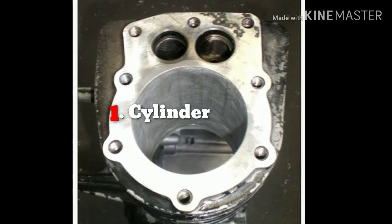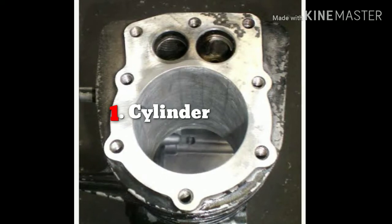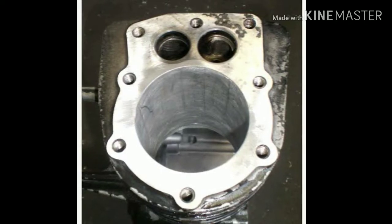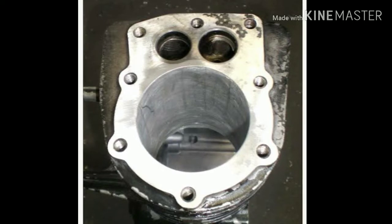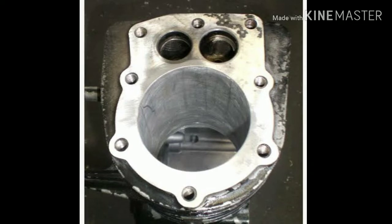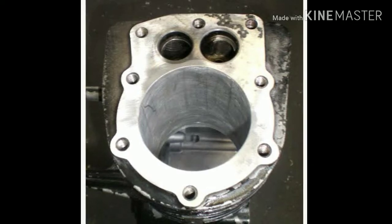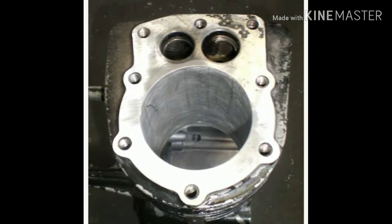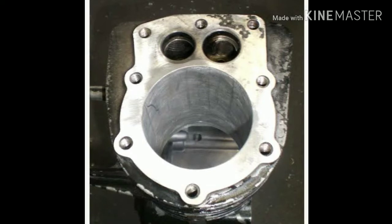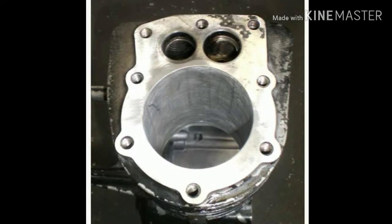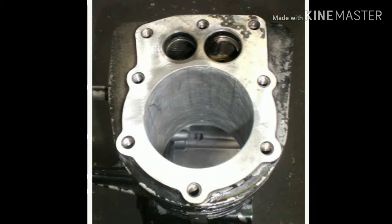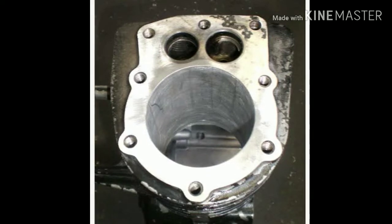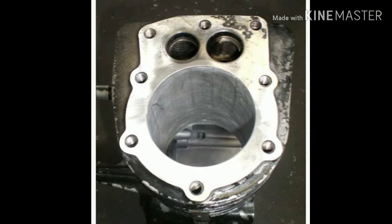The first part is the cylinder. A cylinder is the central working part of a reciprocating engine or pump — the space in which the piston travels. Multiple cylinder engines are commonly arranged side by side in a bank or engine block, which is typically cast from aluminum or cast iron before receiving precision machine work. Cylinders may be sleeved or sleeveless, with a wear-resistant coating such as nickel seal. A sleeveless engine may also be referred to as a parent bore engine.